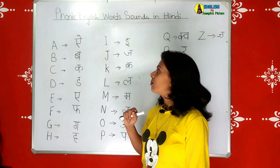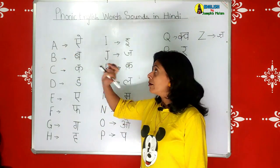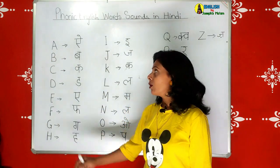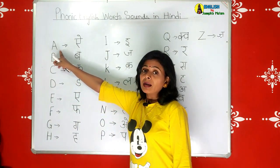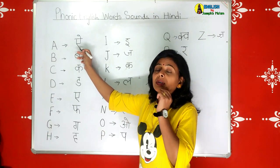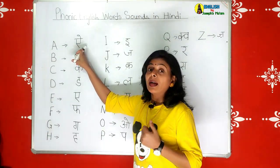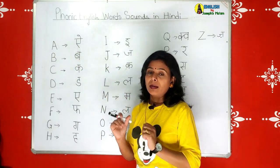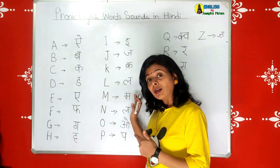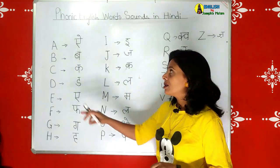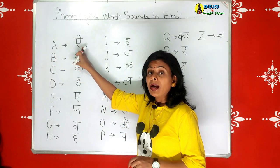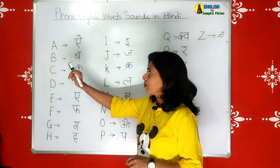We begin with the phonics. The first is A. You all know the English alphabet. A stands for Apple. In Hindi the phonics sound is 'a'. Most of you I've heard saying 'Apple' incorrectly because the phonics is not clear to you. If the phonics is clear, you will be able to speak properly. So we say: A - Apple. Please remember A.